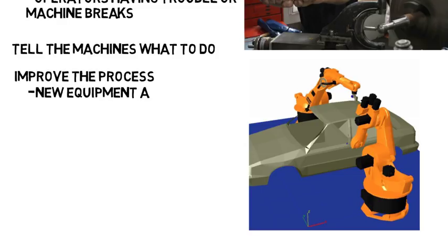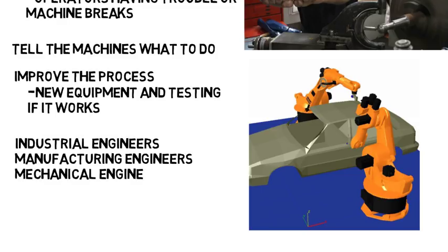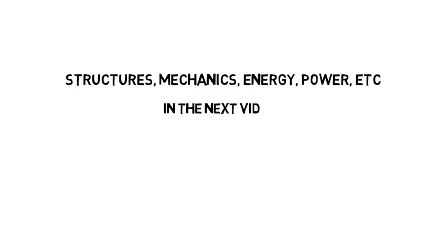Manufacturing engineers also try to improve the process and make it better, like getting new equipment and testing that it works and will increase the company's profit. Industrial engineers, manufacturing engineers, and even mechanical engineers are common examples of people you could see working in a career like this. I talked about a senior project in our industrial engineering video about a team that looked at the process of manufacturing buses, which could apply to this — so check that out. In the next video I'm going to go over the other subfields, grouped together to keep the video a little shorter.